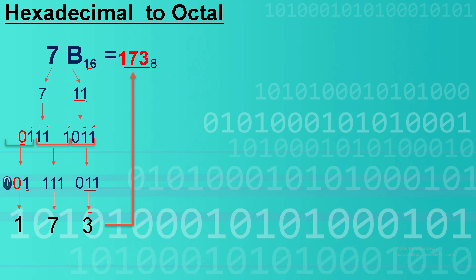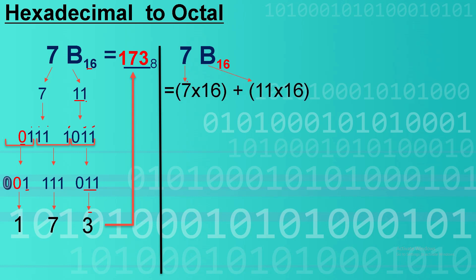To prove this and show the proper solution, we will also convert 7B hexadecimal to decimal directly. Using the same method, you copy the number 7 here — 7 times 16. Then, since B is equivalent to 11 in the hexadecimal ASCII code table, we put 11.